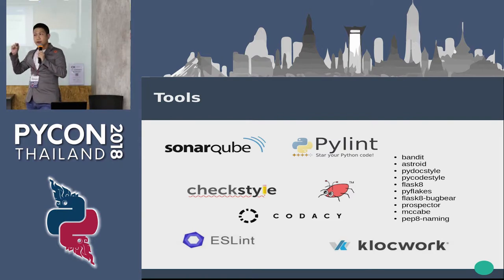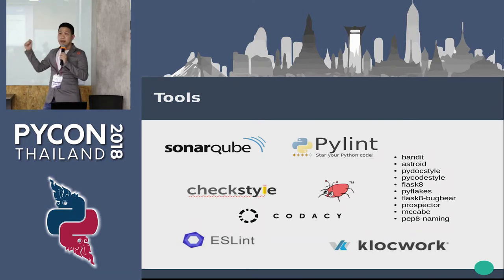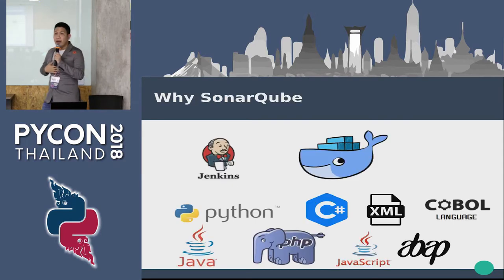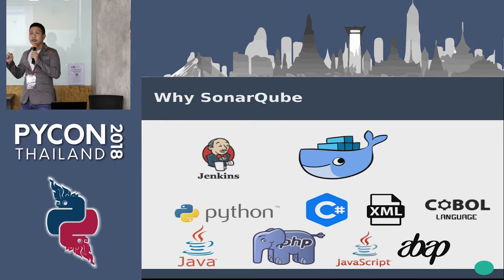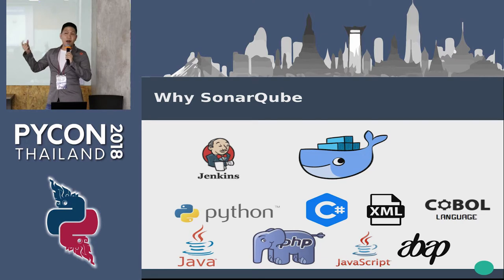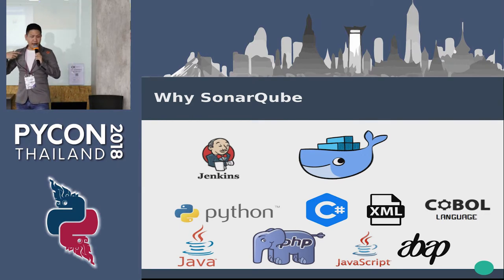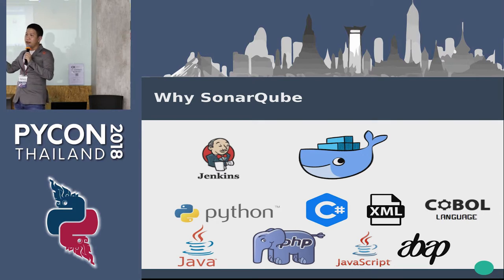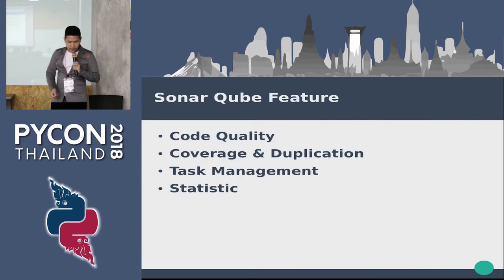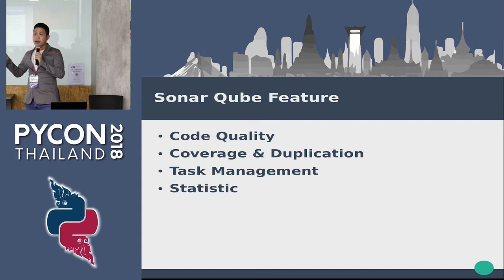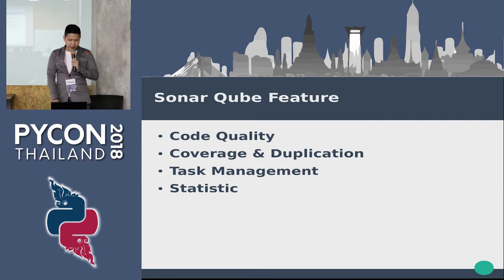Some tools have a beautiful UI, some do not, and some are only text. Some can be used in Python and some can't. Why do I use SonarQube? First, it's easy to integrate with Jenkins. Second, it has a Docker Hub image for easy install and uninstall. And lastly, I choose SonarQube because it supports 20 languages. I choose four features: code quality, coverage and duplication, path management, and statistics.